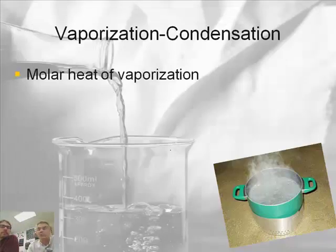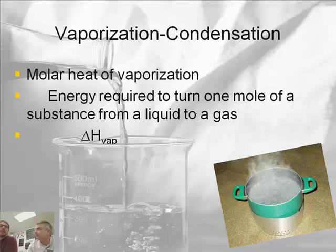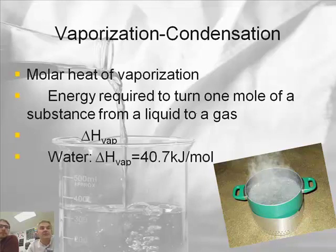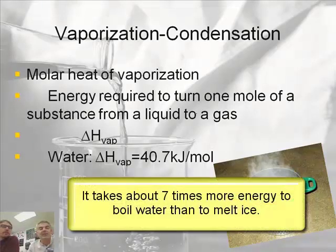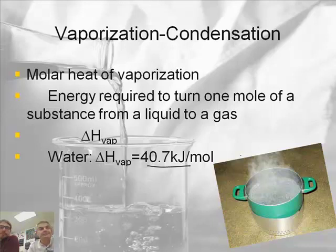What about vaporization and condensation? Well, there's another term, kind of like fusion and solidification. It's something called the heat of vaporization—the energy required to turn one mole of a substance from a liquid to a gas. We're going to get a delta H with a symbol—vape, V-A-P. Vaporization. And this number is 40.7. Now, interesting—that's a lot bigger than the 6.01. That's like seven times more. So it takes a lot more energy to boil water than it does to melt ice. Because the bonds are stronger.